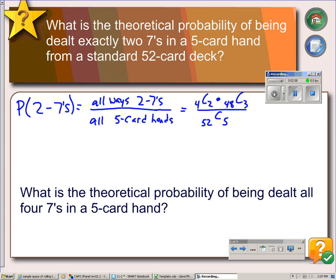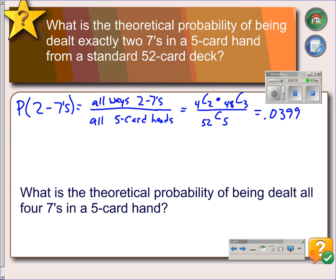And if you put that all in your calculator, you find the probability is 0.0399, so about 4%.